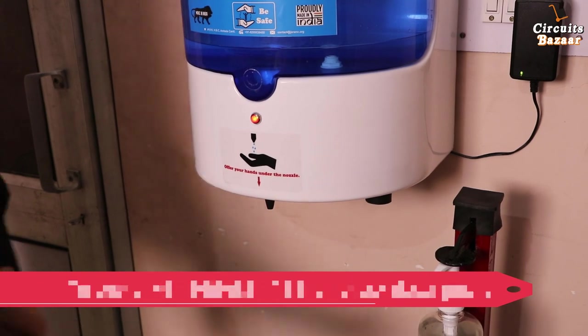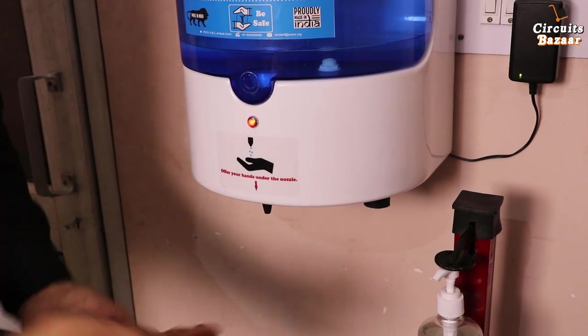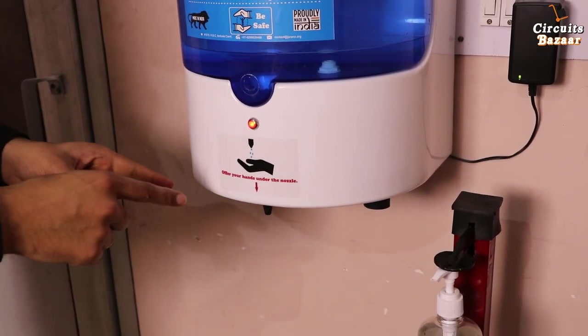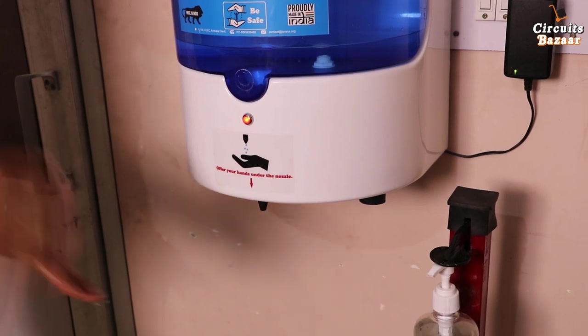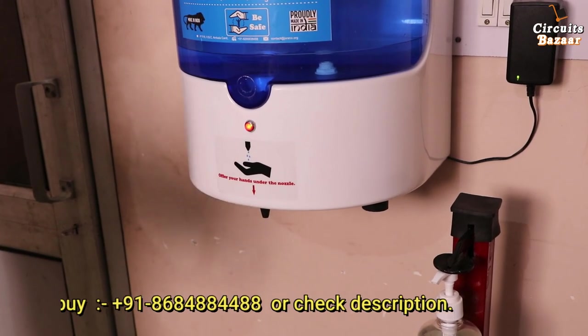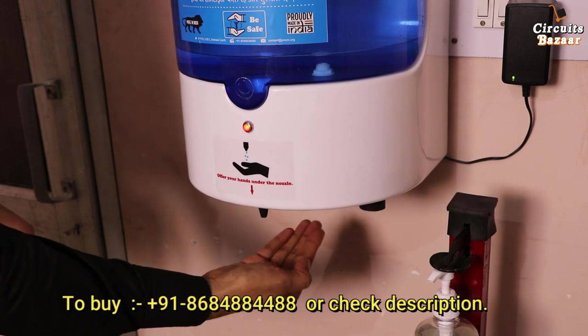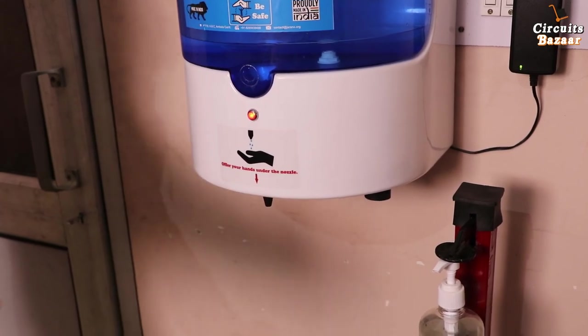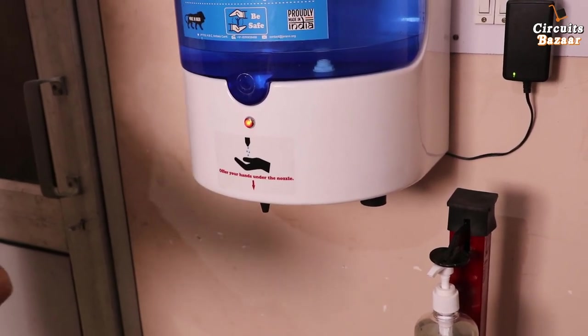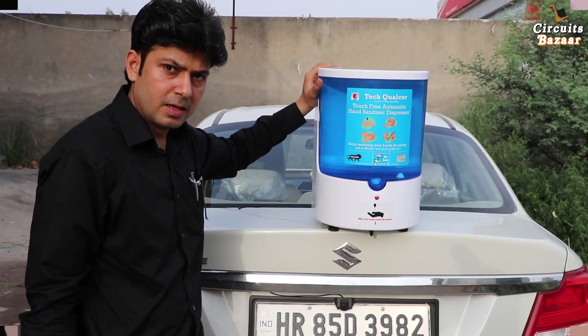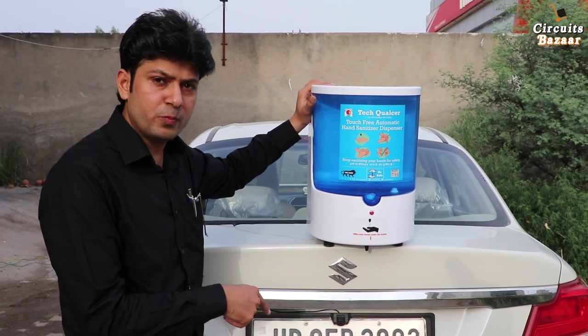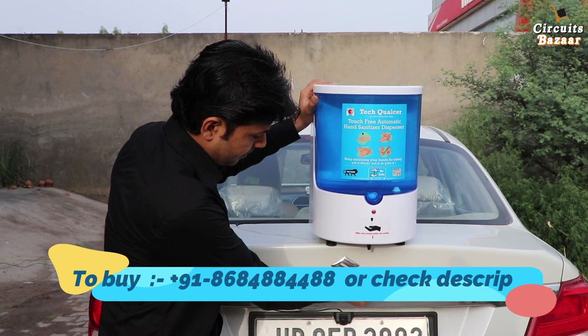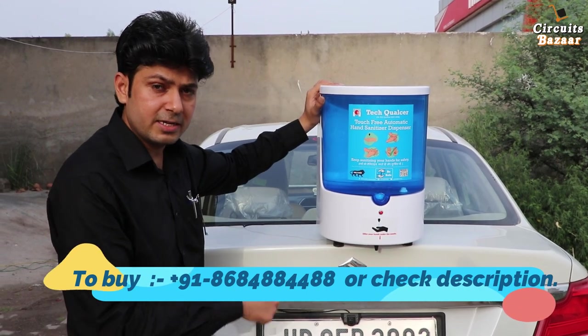This is a little bit closer view. You can see blue light. This is not the excess amount of flow like the other sanitizer. Now let's use it like this. When my hand is going away, then it will activate.